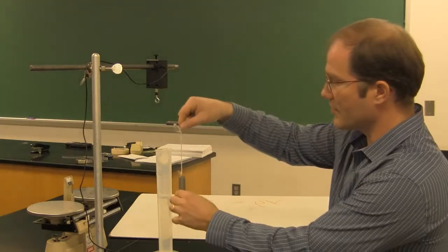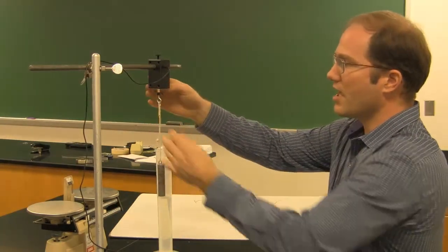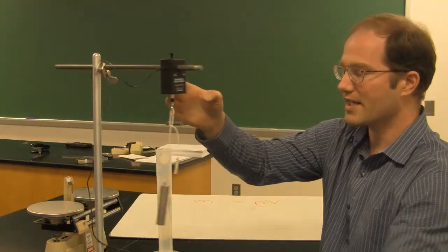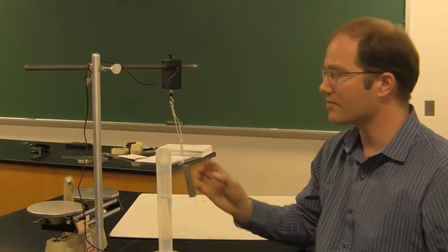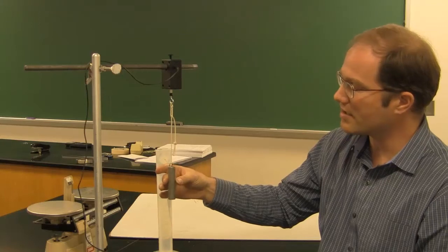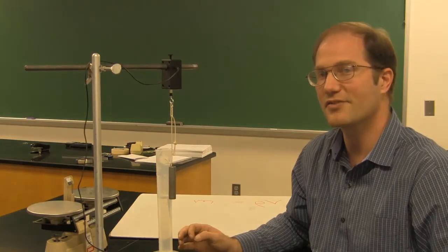So if I submerge an object in this water and I'm measuring the tension in the string, I have a force probe here. This is a dual range force sensor. It's connected to the lab probe, which is connected to the computer. It's going to measure the tension in this string. As I submerge this cylinder into the water, the tension in the string is going to change.